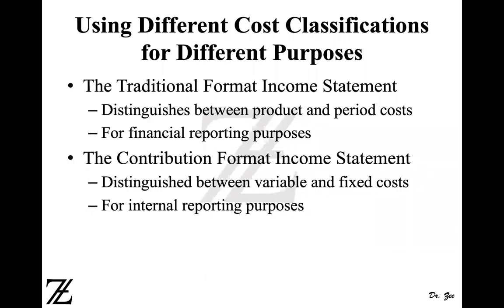The traditional format income statement is required by GAAP, so it distinguishes between your product cost and period cost. Product cost is the cost to manufacture a product, which is direct material, direct labor, and manufacturing overhead. A period cost is selling and administrative expenses. It is used for financial reporting purposes for external users like bankers, lenders, stockholders, and other stakeholders interested in your company.